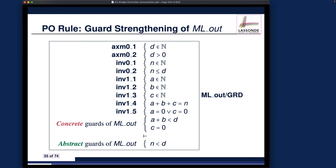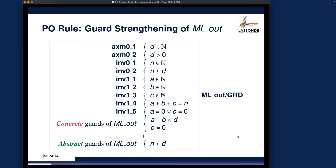We proved the first proof obligation related to guard strengthening of refinements, namely the one for ml_out events. The concrete event ml_out — we proved that its concrete guard actually implies the abstract guard. That's exactly what guard strengthening is about. If you're wondering about the intuition for why this proof obligation is formulated this way, you can look at the previous video. Now let's move on to the other one.